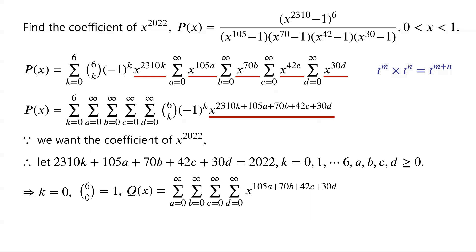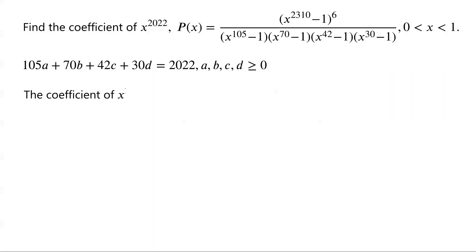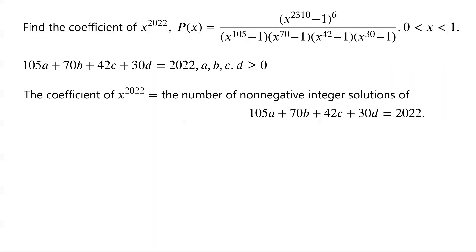To find the coefficient of X to the power of 2022 in Q of X, we set the exponent 105A plus 70B plus 42C plus 30D equal to 2022, where A, B, C, D are all non-negative integers. The coefficient of X to the power of 2022 in Q of X equals the number of non-negative integer solutions of the Diophantine equation 105A plus 70B plus 42C plus 30D equals 2022.